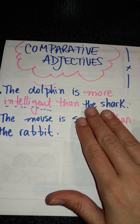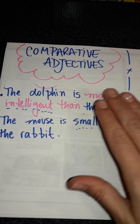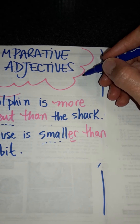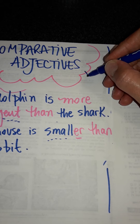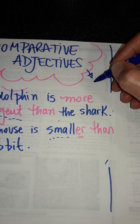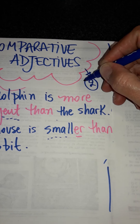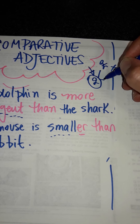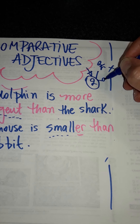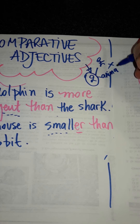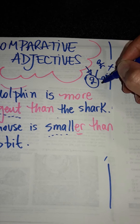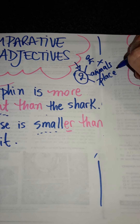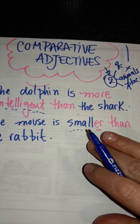For comparative adjectives, we can compare only two things — two people, two animals, two places — but always two.